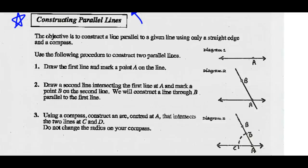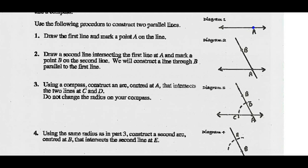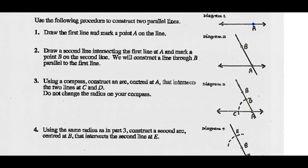Draw the first line and mark point A on the line. Second, draw a second line intersecting the first line at A and mark a point B on the second line. We're going to construct a line through point B that's going to be parallel to our first line.